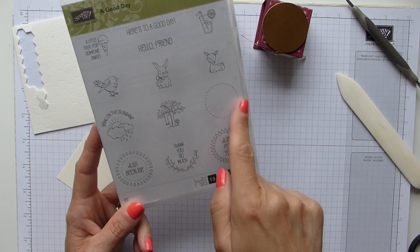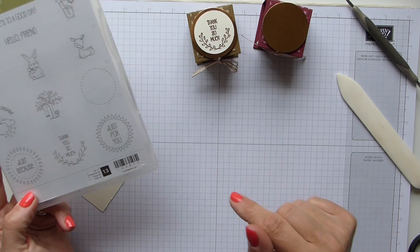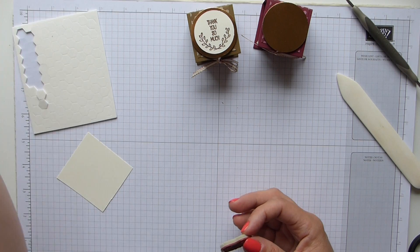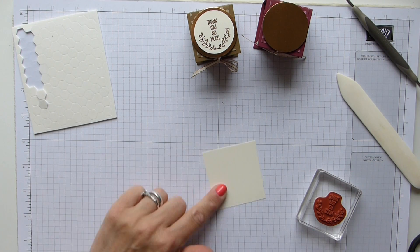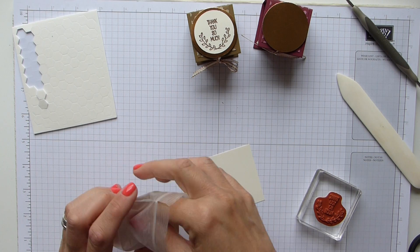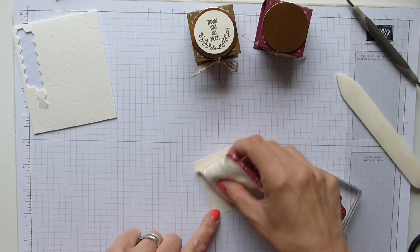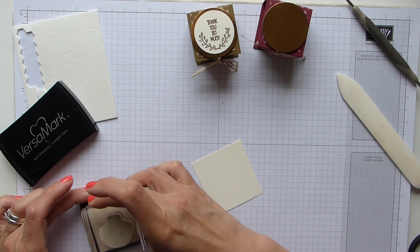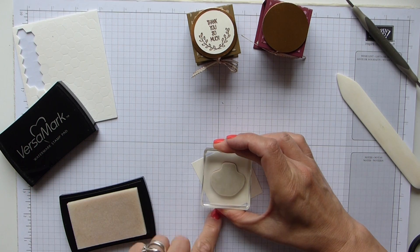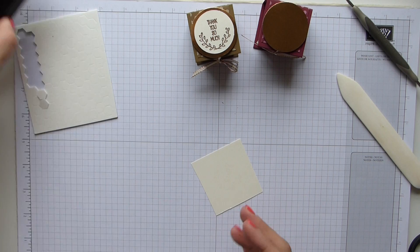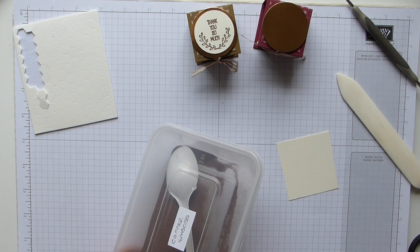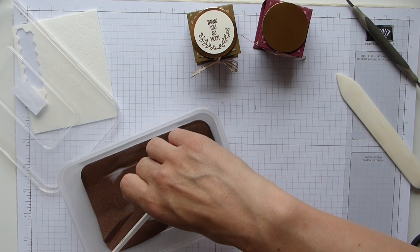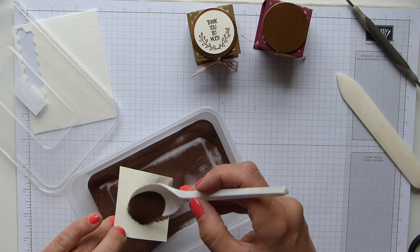And then last but not least, the beautiful a good day stamp set. And again, it's got so many different bits that you can use. I do like the thank you, which I think is really quite cute. So pop that on a block, I've got some very vanilla. And then we're just going to heat emboss it. So use my embossing buddy to get rid of any residue off my hands, have my versa mark nice and juicy, pop that on. My copper embossing powder, as it says on the lid. And then just sprinkle this over.